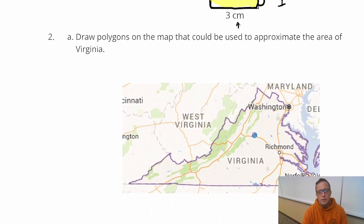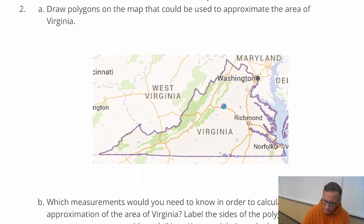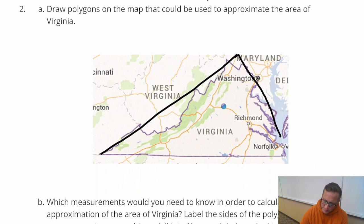All right, number two. Draw polygons on the map that could be used to approximate the area of Virginia. Polygons, so I'm assuming it wants us to do more than one polygon. What I see, let me kind of move this over here. What I kind of see, and it's not perfect. If you want to figure out the area, what I see is just one big polygon. I see this right here. Let me fix that.